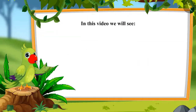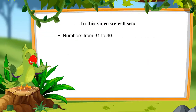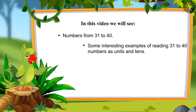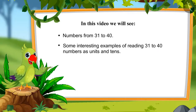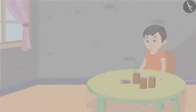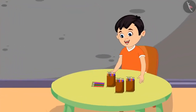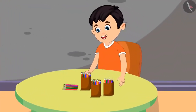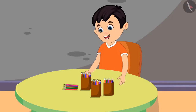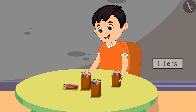In this video, we will see some interesting examples of reading numbers from 31 to 40 and how to read those numbers as units and tens. Today, Chotu went to buy pencils from the market. Now I have a lot of pencils with me. I will count all the pencils. Firstly, here is a box of pencils with 10 pencils, that is 1 ten. Then I took another pencil box containing 10 more pencils, meaning 1 more ten.